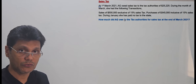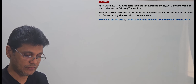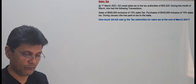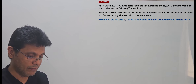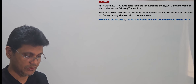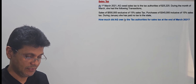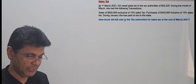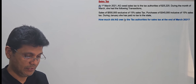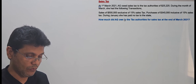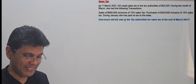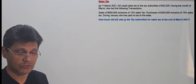At 1st March 2021, AG owed sales tax to the tax authorities of $25,225. During March, AG had the following transactions: sales of $500,000 exclusive of 15% sales tax, and purchases of $345,000 inclusive of 15% sales tax. During March, she paid no tax to the tax authorities. How much did AG owe to the tax authorities for sales tax at the end of March 2021?